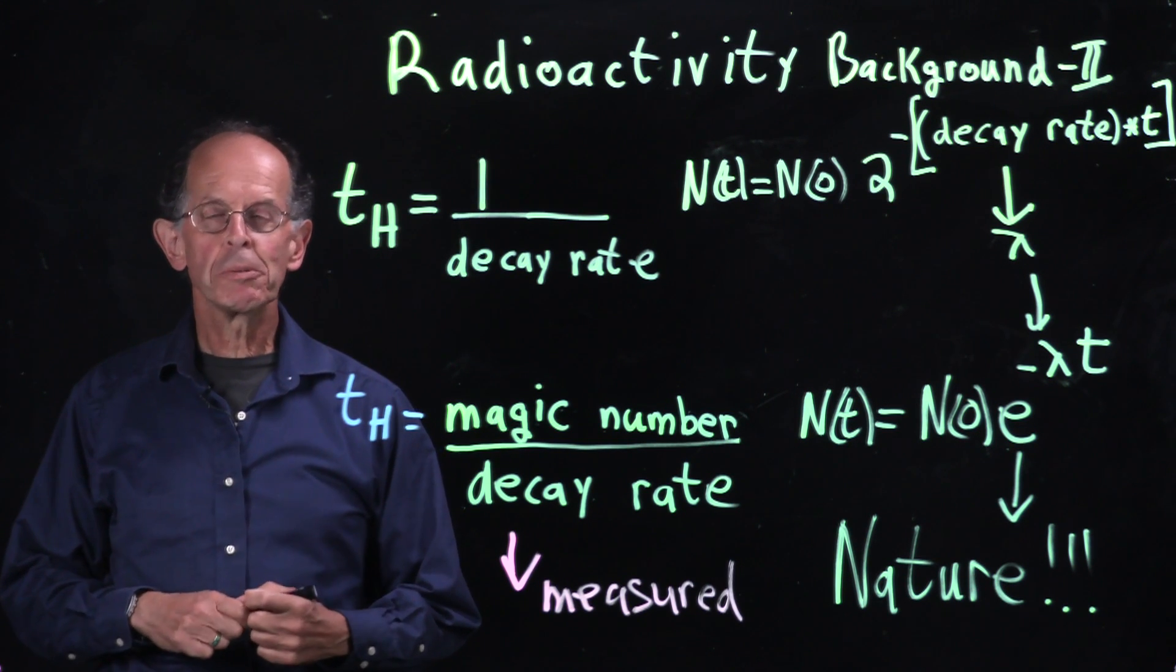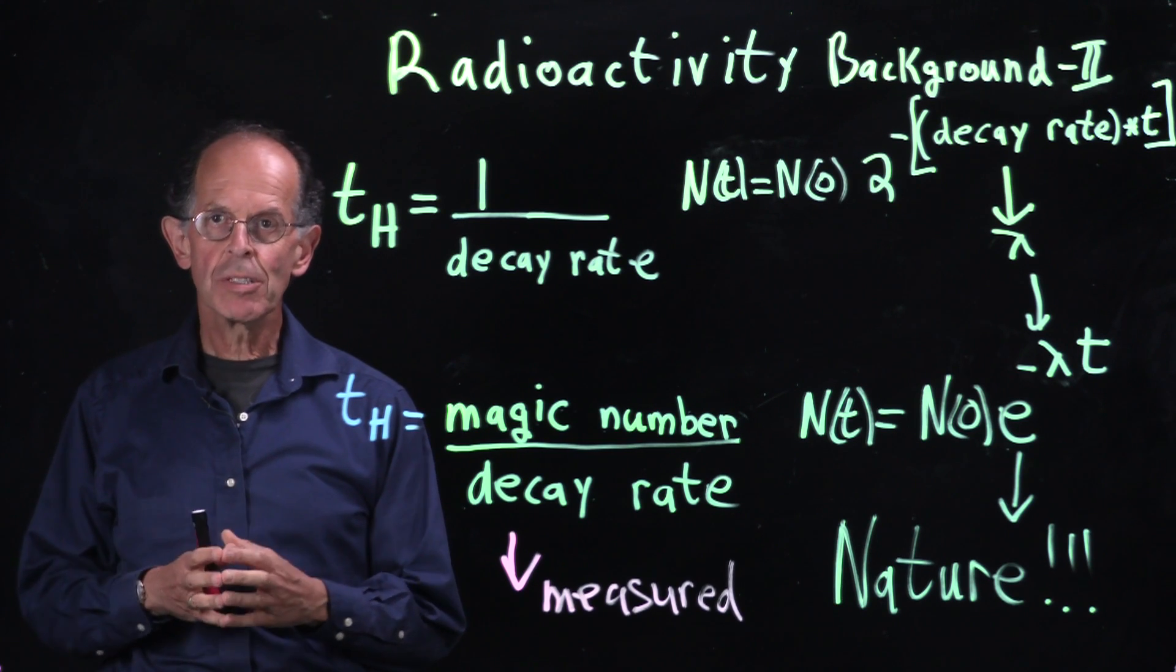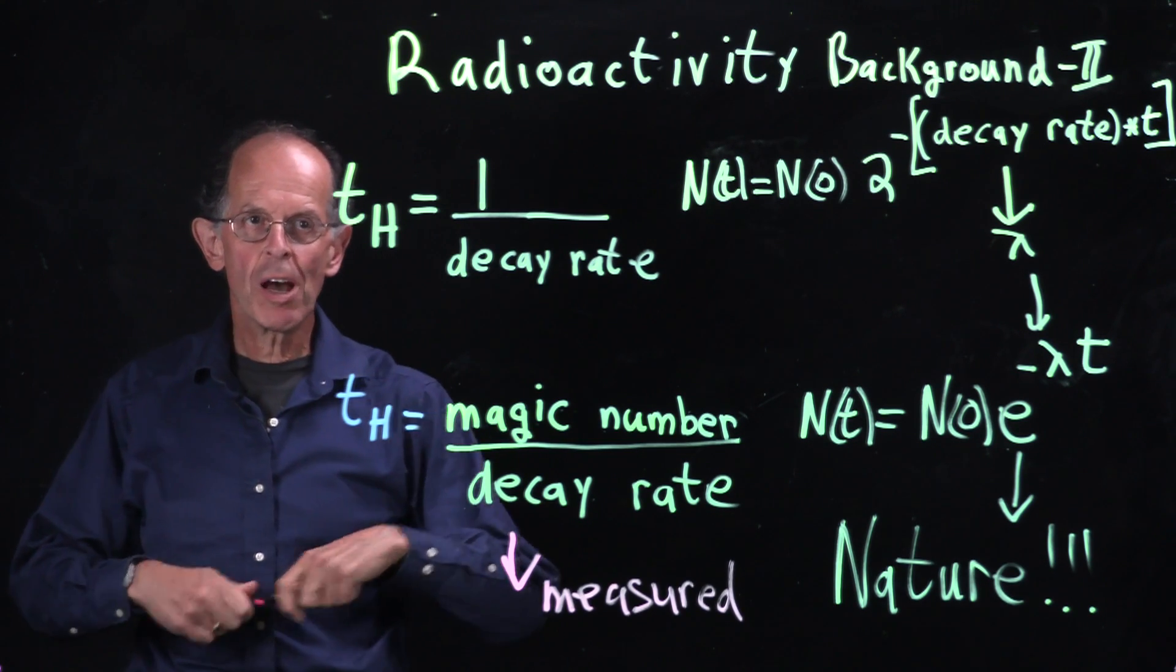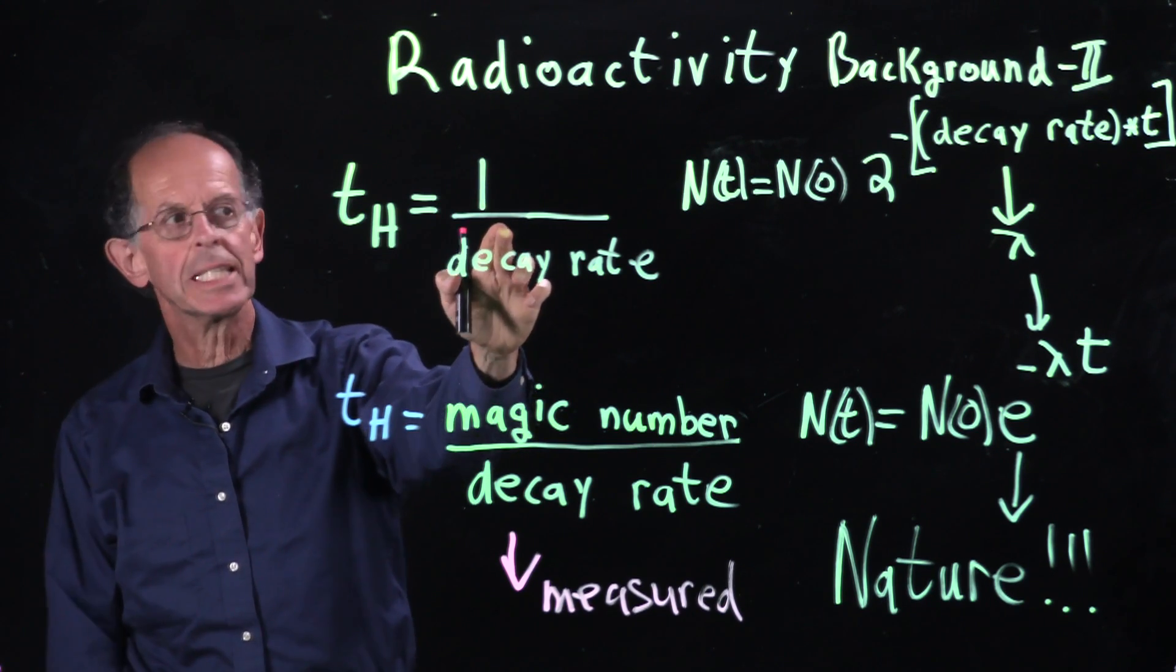Continuing our background for radioactivity, we're almost there. In the last video on background, we saw that the half-life, th, was 1 over the decay rate.